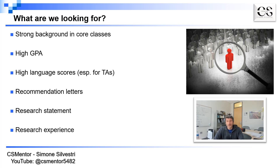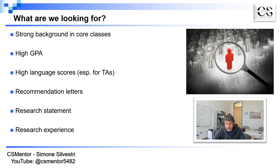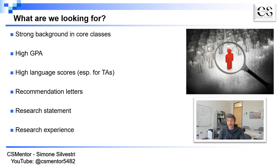As reviewers of graduate applications, the first and most important thing we look for is a strong background in core classes. For computer science applicants, that means algorithms, programming, operating systems, and databases. We also look at high GPA, and high language scores — especially important for teaching assistants since they will be teaching classes. Sometimes a director of graduate studies will interview you on Zoom to make sure you are actually able to speak properly.